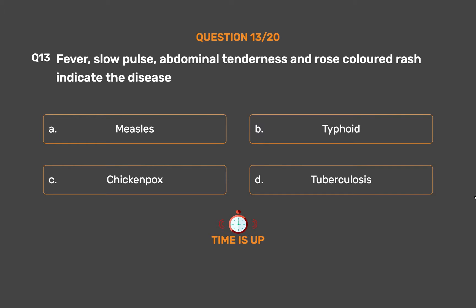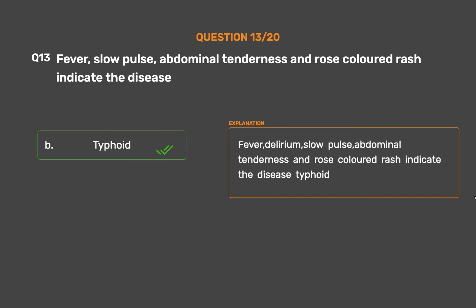The correct answer is Option B: Typhoid. Fever, delirium, slow pulse, abdominal tenderness, and rose-colored rash indicate the disease Typhoid.